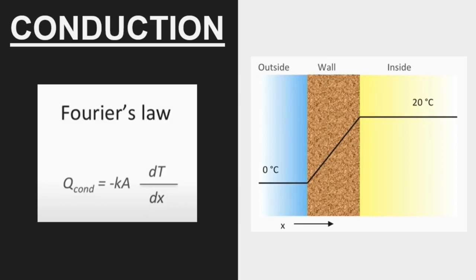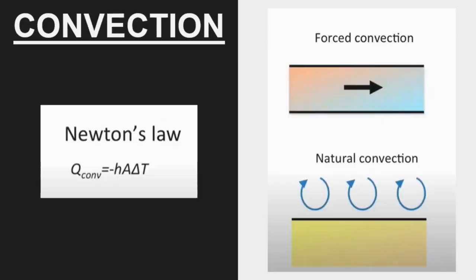Second, we have convection: the transfer of heat by movement of fluid, where particles of the medium actually move to transfer heat. Convection is given by Newton's law: q_convection = h·A·ΔT, where A is the contact area, ΔT is the temperature difference, and h is the heat transfer coefficient. The heat transfer coefficient depends on several operational factors — the density of the liquid, the kind of flow the fluid has — and is essentially the reciprocal of the thermal insulation that the fluid has.